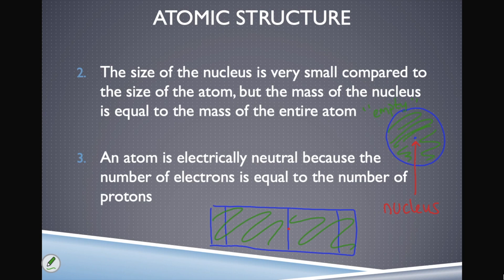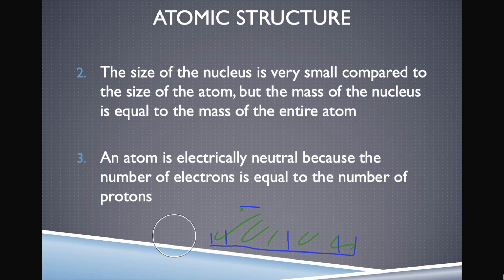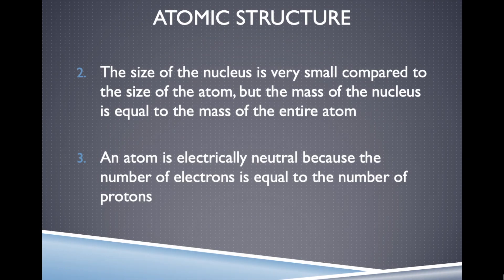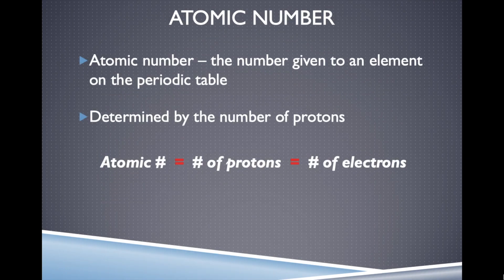This is important because we can actually figure out the number of protons, neutrons, and electrons in an atom based on this information. We're going to talk about two different numbers that every atom has. The first is called the atomic number.